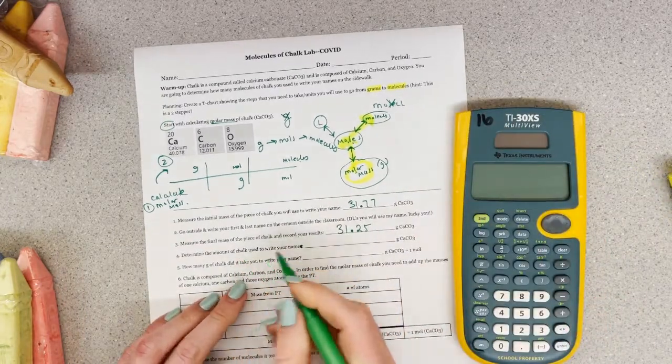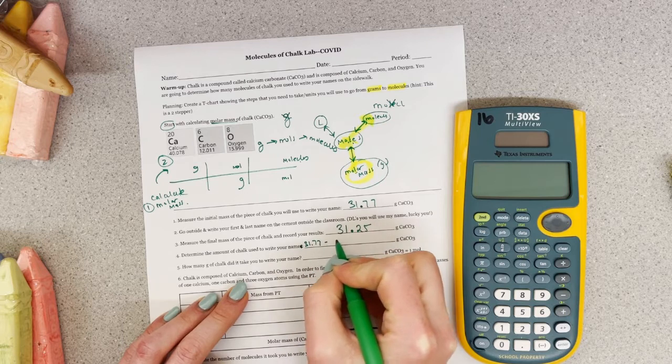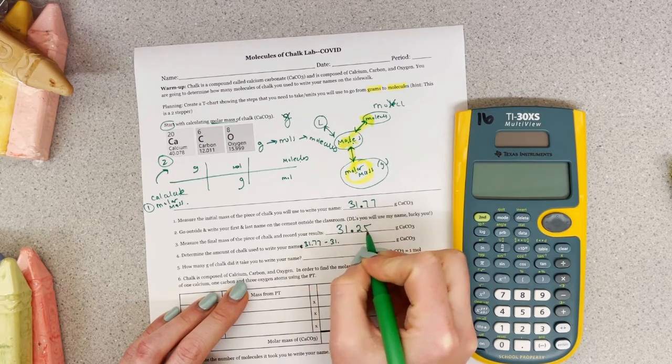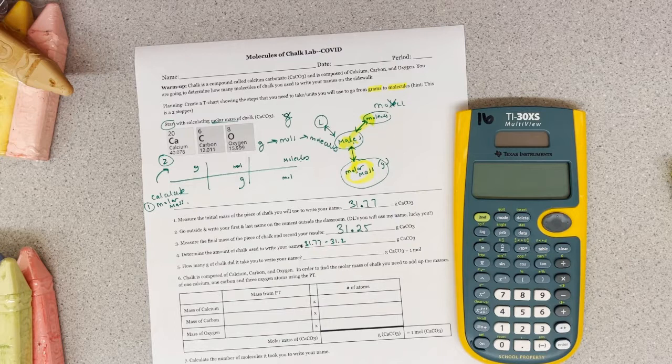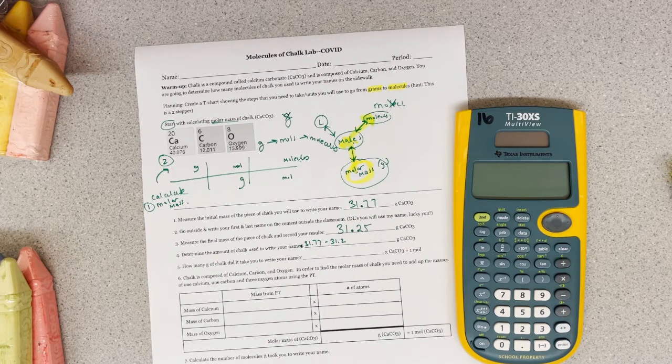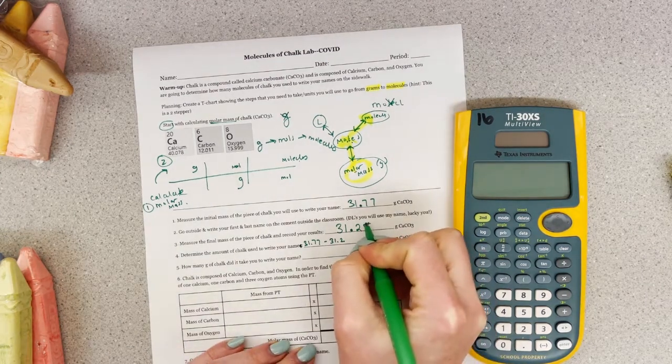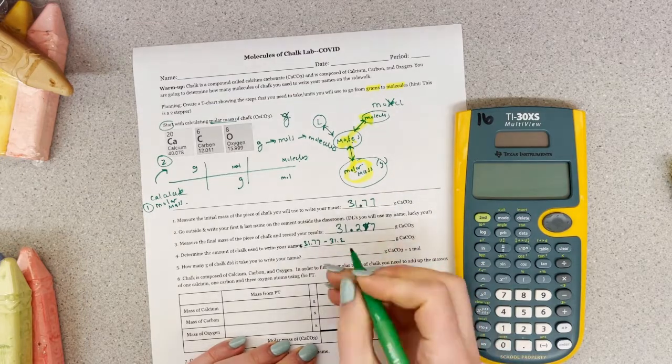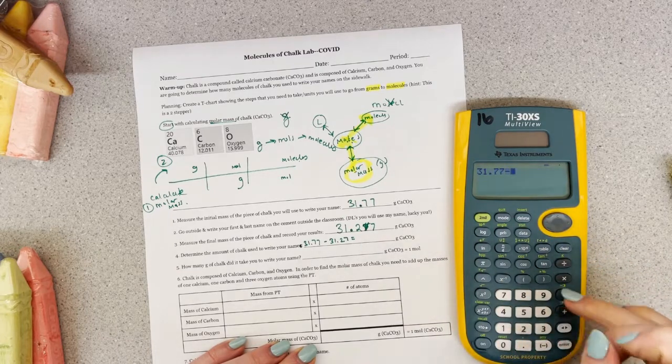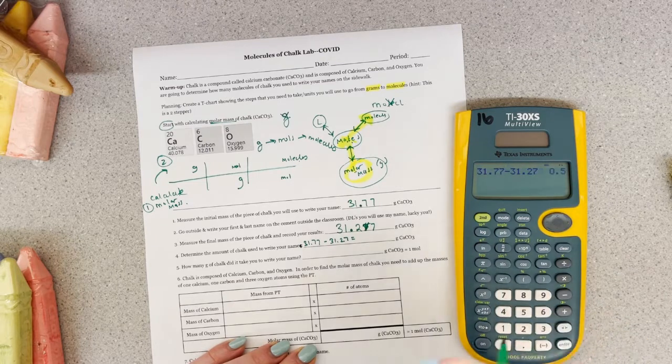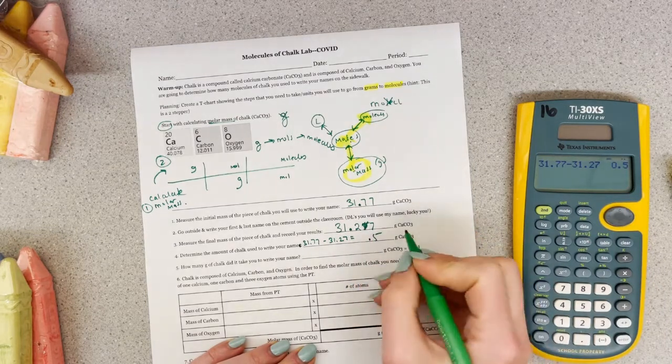Okay, so it says, determine the amount of chalk used. So I'm just going to do this minus this. I'm going to say, 31.77 minus 31. Oh wait, that was 27, wasn't it? Let me go double check it. It was. I've still got my piece of chalk over there. 31.27. Okay, so I think it's just 0.5. 31.77 minus 31.27 and I get 0.5.